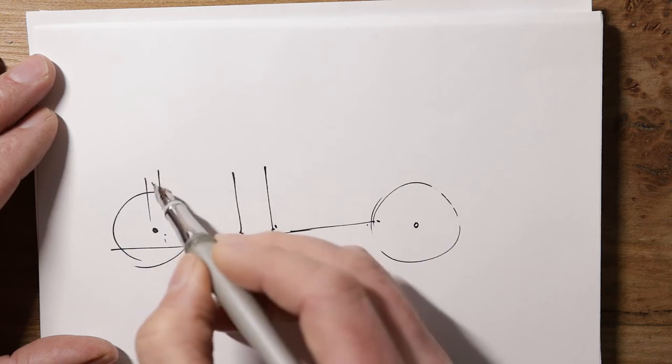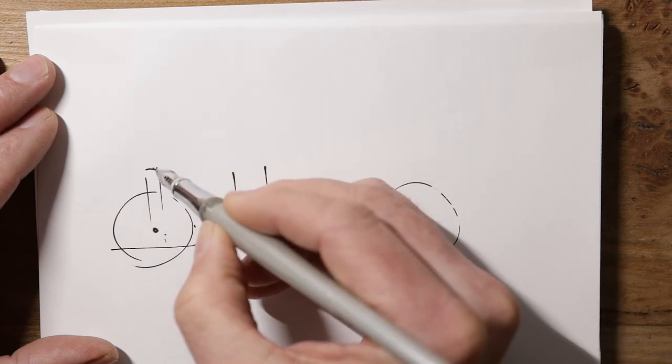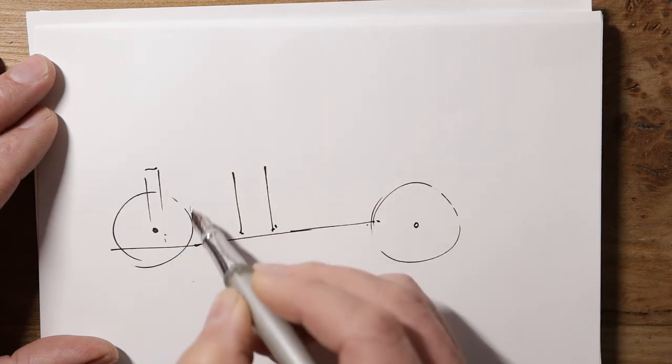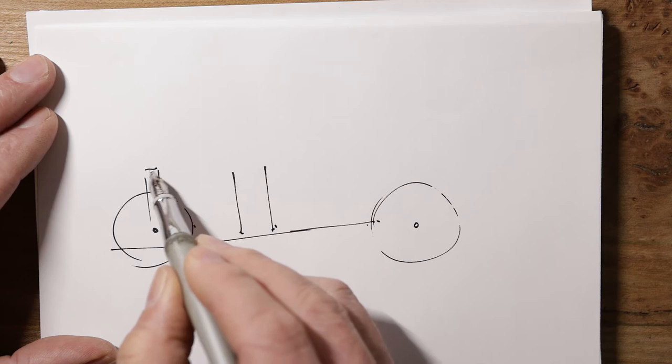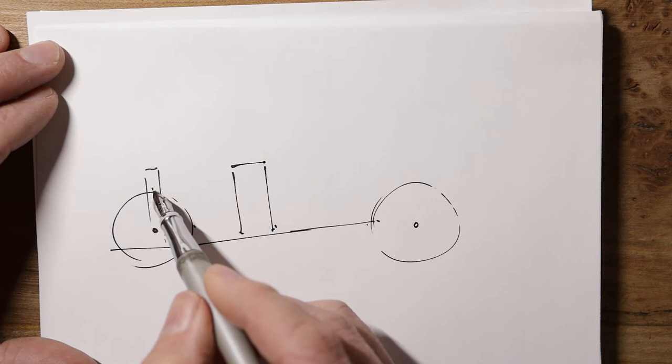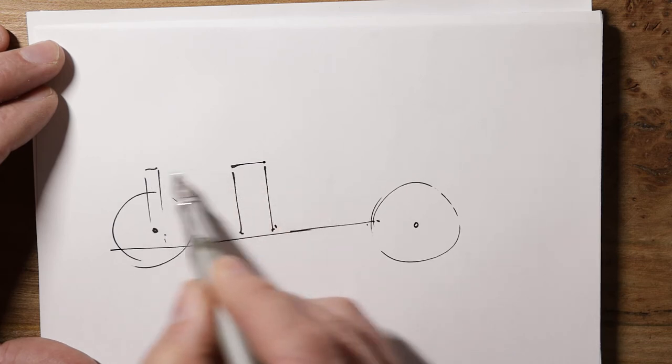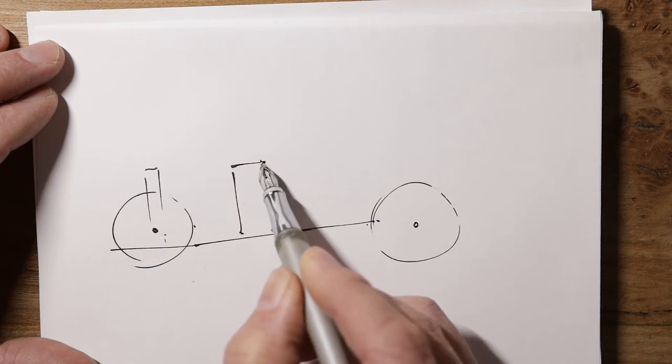So our radiator goes up for a bit and then it rolls away from us. It has a curve on the top. So that'll be where the curve starts. And that's also going to be a line that we take across to here. So we're going to leave this part open so we can see the engine. So this curve here will go across.